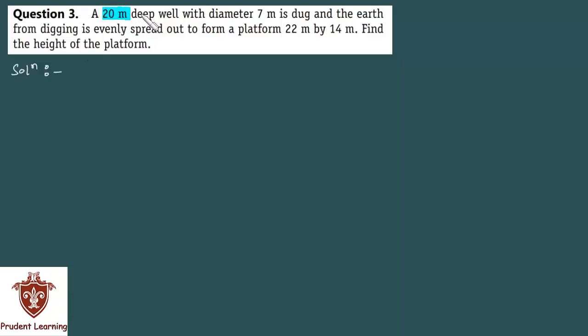A 20 meter deep well with diameter 7 meter is dug and the earth from digging is evenly spread out to form a platform 22 meter by 14 meter. Find the height of the platform.